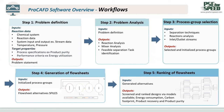In step five, the program will screen and rank the alternatives using available models. The user can rank the alternatives in terms of energy consumption, carbon footprint, product recovery, and productivity.